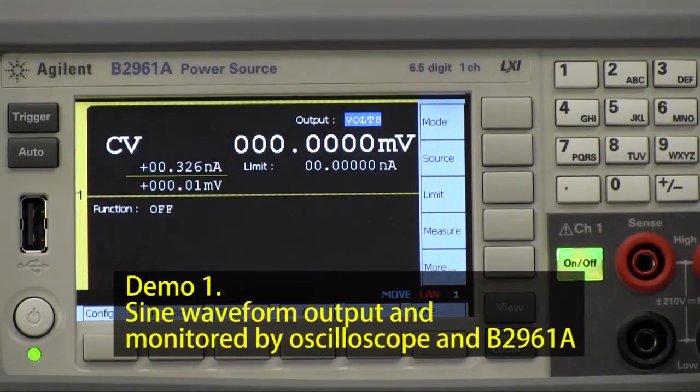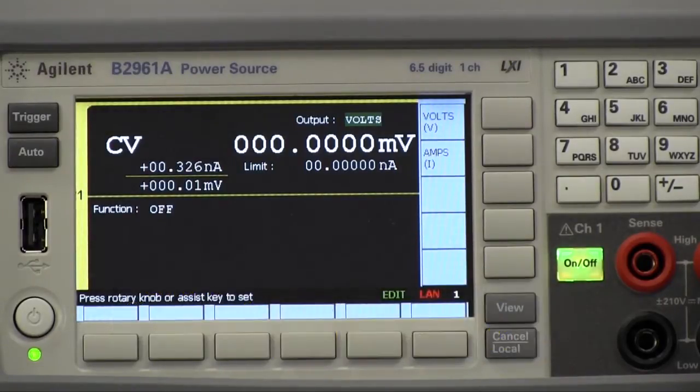First, we have to set the output mode to be either voltage or current. As you can see, it's very easy to switch between these two modes on this instrument. Let's go ahead and set this to volts.